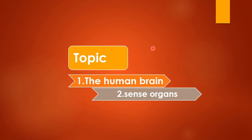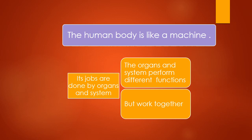Today we are going to discuss two topics: the first is the human brain, and the second is sense organs. The human body is like a machine, and every machine has the ability to do work. In the same way, in the human body, organs perform that work. Organs performing similar functions group together to form a system, so our body has many systems. These organs and systems perform different functions but they work together.